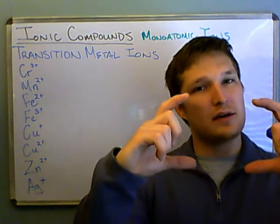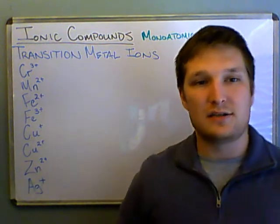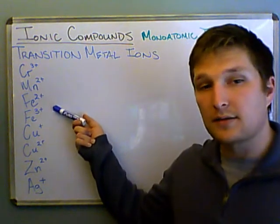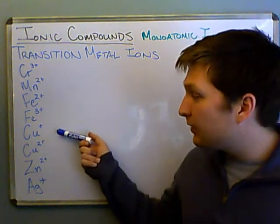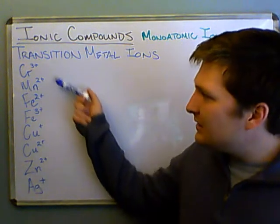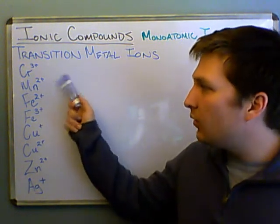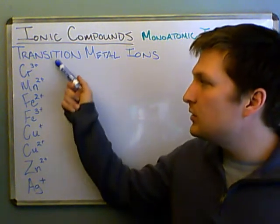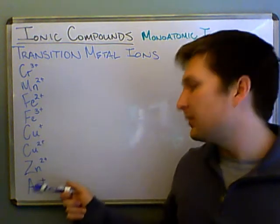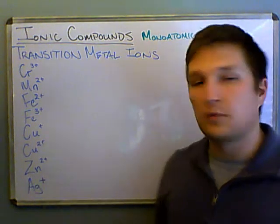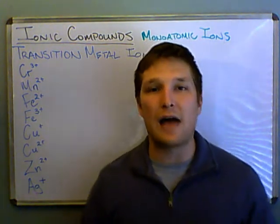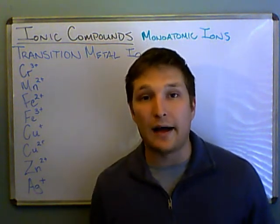They can do some weird things. For instance, iron can either be 2 plus or 3 plus. Copper can be plus 1 or plus 2. Manganese is usually always plus 2. Chromium is usually always plus 3. Zinc is plus 2. Silver is plus 1. But there's still no real rhyme or reason to why.